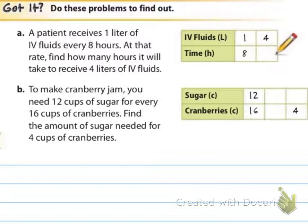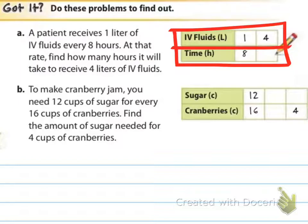That was an example that the book did for us. Now I'd like for you to do an example on your own. We'll do part A together and then part B will be completely on your own. So go along with me and let's make this table. IV fluids is on top and time in hours is on the bottom. The story says that a patient receives one liter of IV fluids every eight hours — so one liter for every eight hours.